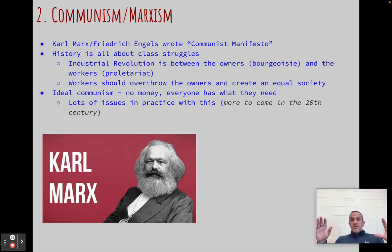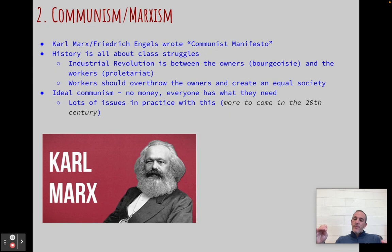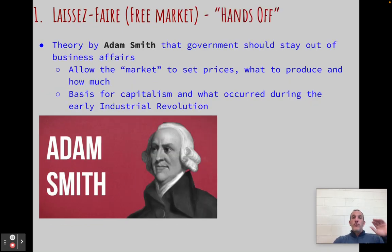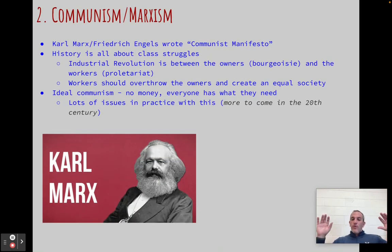There's a ton of issues with this system. I'm sure in a group project you've noticed there's always one person who doesn't do the work — that's the problem with communism. People are greedy and people are going to cheat the system. Nothing really happens with Marxism or communism until we get to the 1900s — the 20th century — and there'll be a couple of revolutions based off of this. So: free market means no government involvement, and communism means overthrow everybody, everyone's equal.